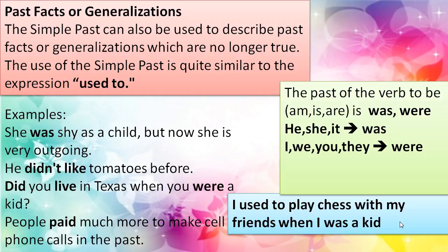She was shy as a child, but now she's very outgoing — outgoing means she likes to talk and make friendships. He didn't like tomatoes before. Did you live in Texas when you were a kid? Yes, I did. No, I didn't. People paid much more to make cell phone calls in the past, but now they use the internet and don't have to pay as much. I used to play chess with my friends when I was a kid.